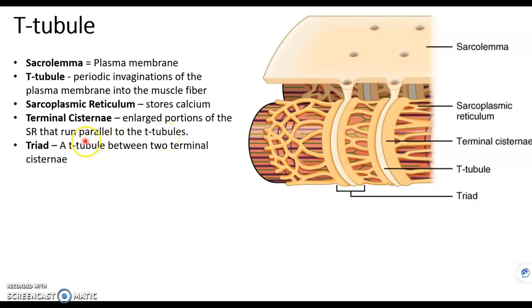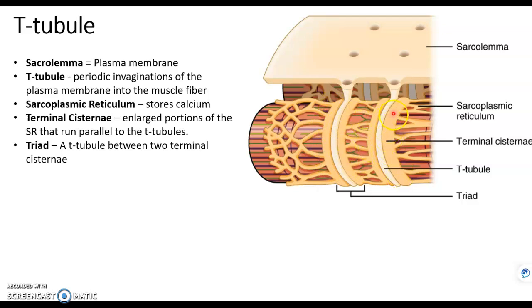Let's get some terminology out of the way. The sarcoplasmic reticulum is all these yellow tubes that you see — it's kind of like endoplasmic reticulum, but its job in muscle fibers is to store calcium, and we'll see why that's important in a bit. When the sarcoplasmic reticulum runs parallel to the transverse tubule on either side, those portions are called terminal cisternae — a thicker part of the sarcoplasmic reticulum where most of the calcium is stored.